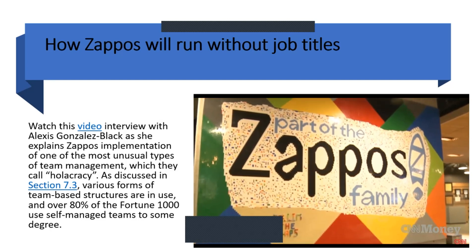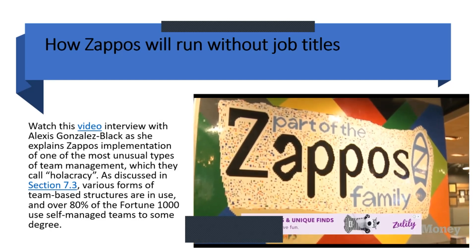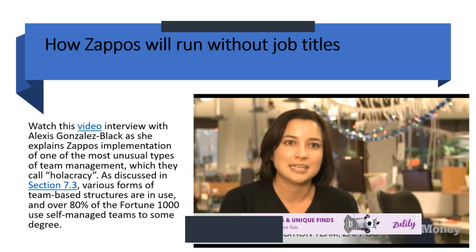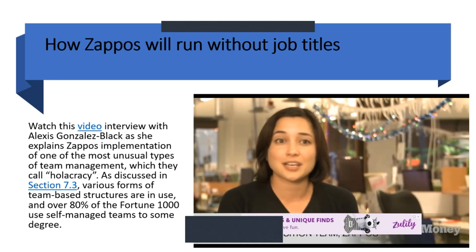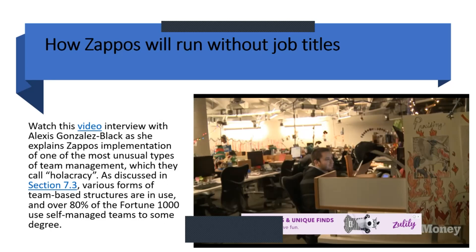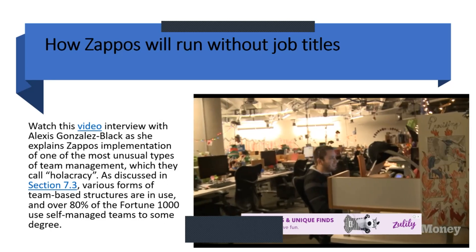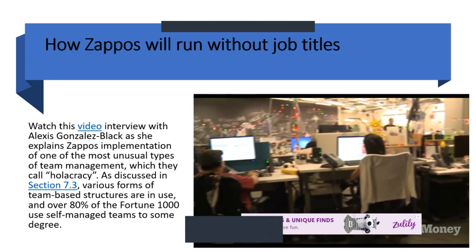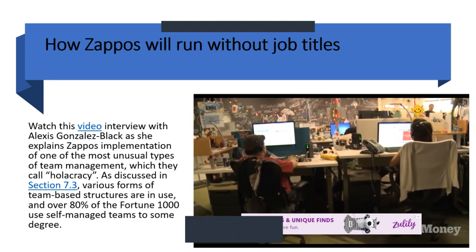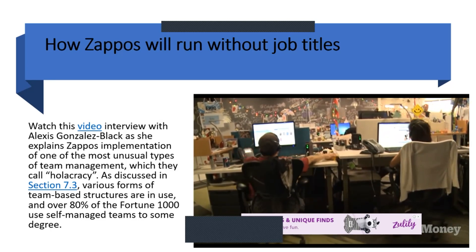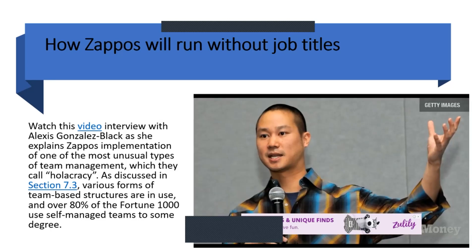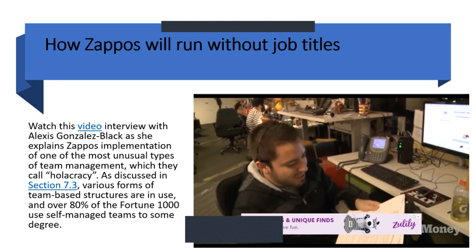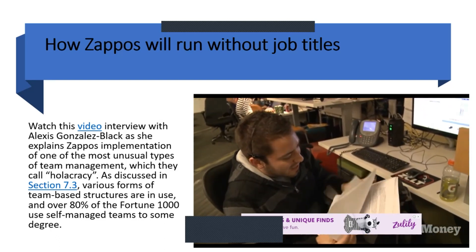Research tells us that as a city doubles in size, the productivity of its citizens increases by 15 percent. Unfortunately, the opposite tends to be true for companies. So Holacracy is Zappos' new organizational system to make the company run more like a city. CEO Tony Hsieh ratified the Holacracy Constitution about eight months ago.